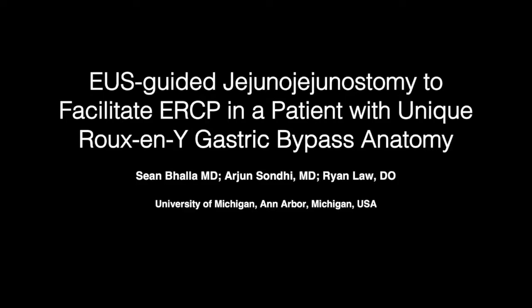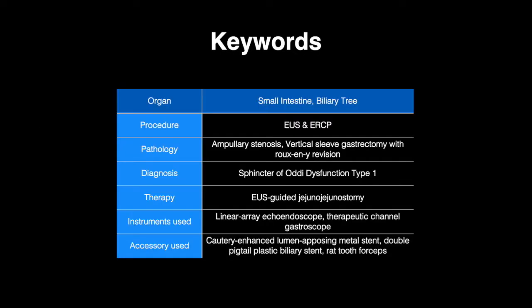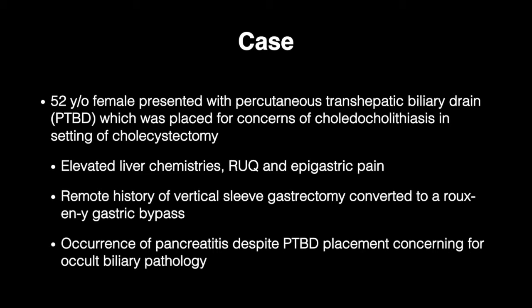EUS-guided jejuno-jejunostomy to facilitate ERCP in a patient with unique Roux-en-Y gastric bypass anatomy. Our patient was a 52-year-old female who presented with an indwelling percutaneous transhepatic biliary drain, which was placed for concern of choledocholithiasis in the setting of prior cholecystectomy.